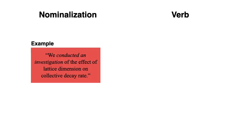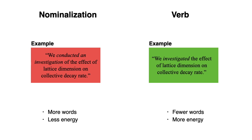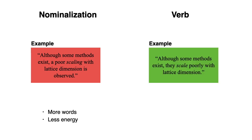Let's look at an example of a nominalization in a sentence: "We conducted an investigation of the effect of lattice dimension on collective decay rate." If we used the verb instead: "We investigated the effect of lattice dimension on collective decay rate." The first version uses more words and has less energy, while the second uses fewer words and has more energy. Another example: "Although some methods exist, a poor scaling with lattice dimension is observed." Using the verb instead: "Although some methods exist, they scale poorly with lattice dimension." The second version is more evocative and uses a better word in the stress position.